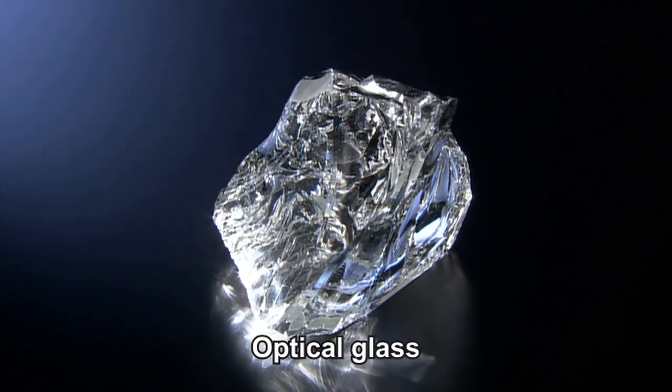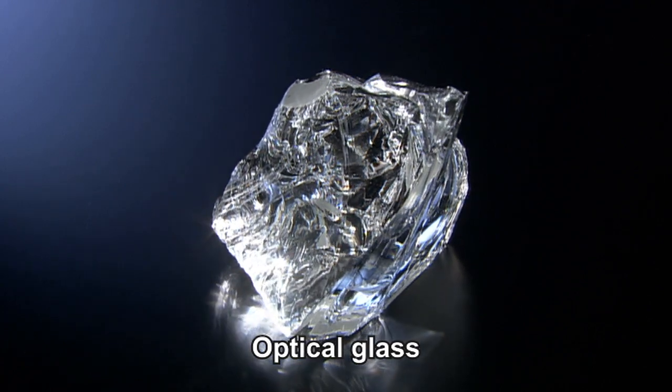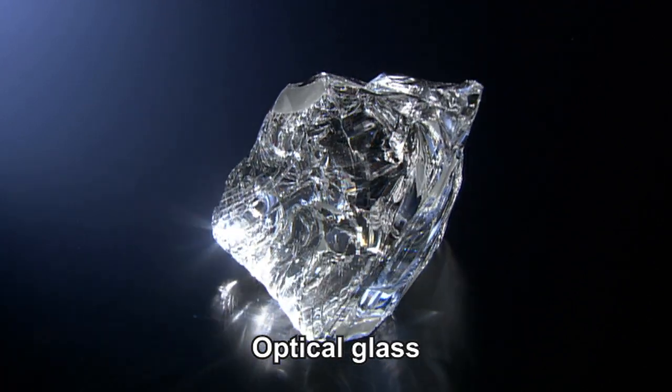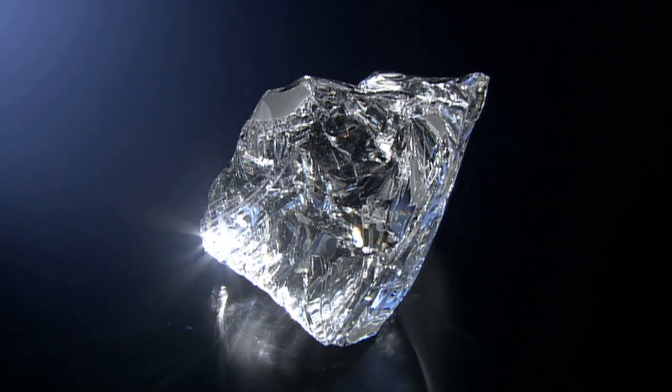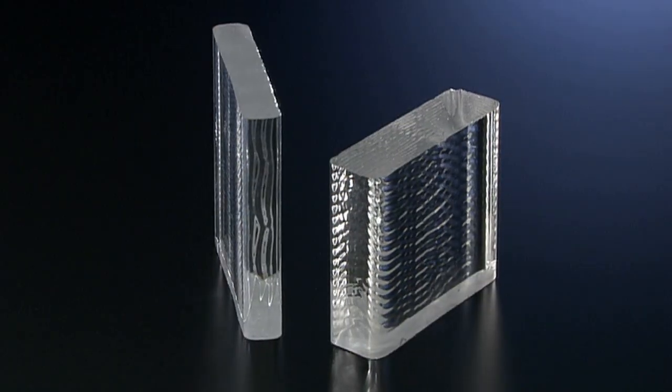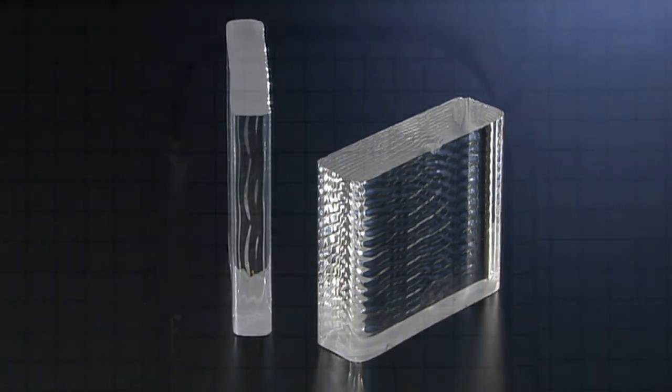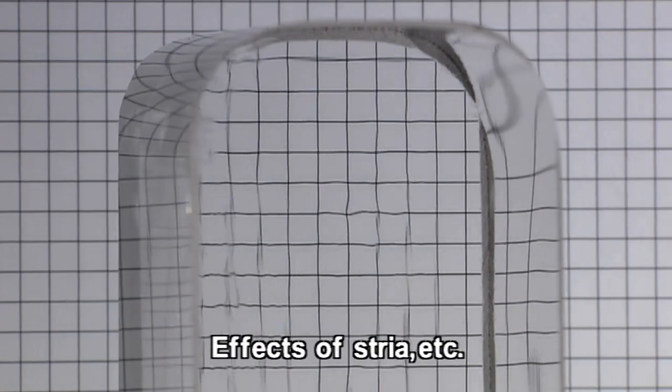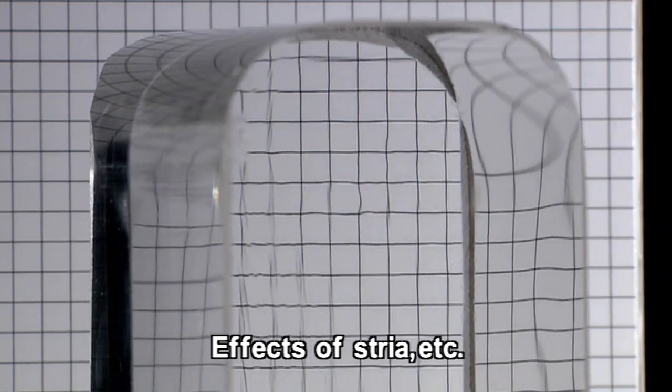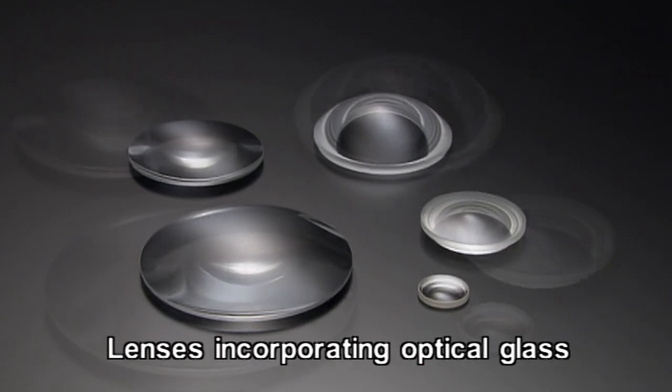Optical glass is created when the impurities are successfully removed. During the manufacturing process, cracks or irregularities, called stria, sometimes appear. Only glass free of such irregularities is used as optical glass.